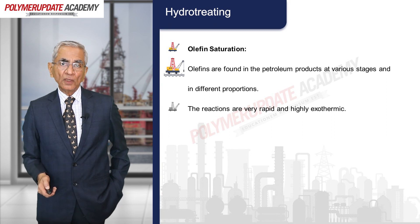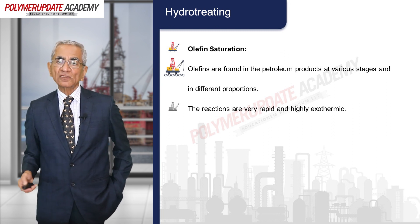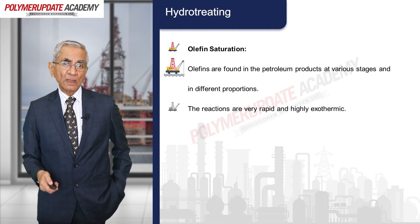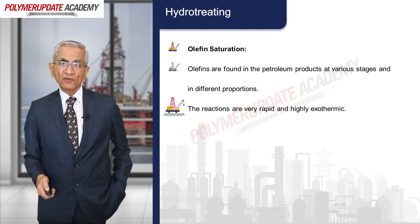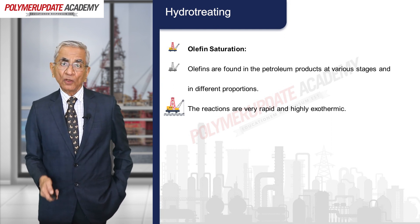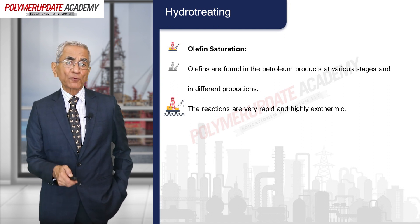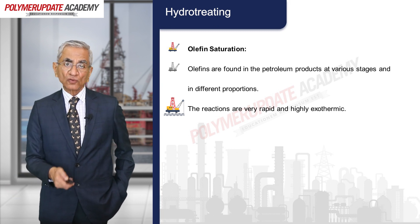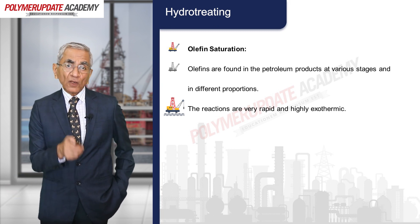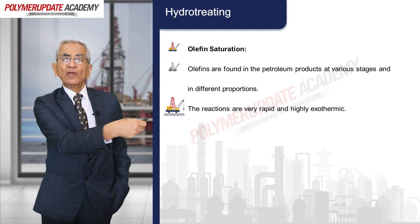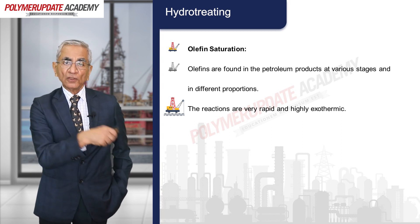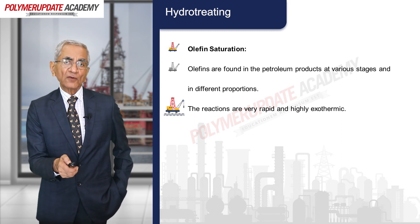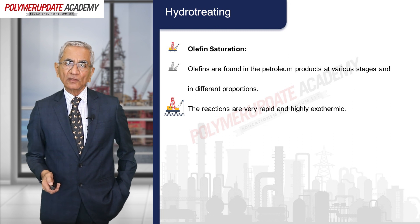Olefins are found in petroleum products at various stages and in different proportions. The reactions are very rapid and highly exothermic. Olefins are produced during cracking operations, so they are generated in a number of refining operations. Those olefins must be saturated, and therefore hydrotreating is the process used.